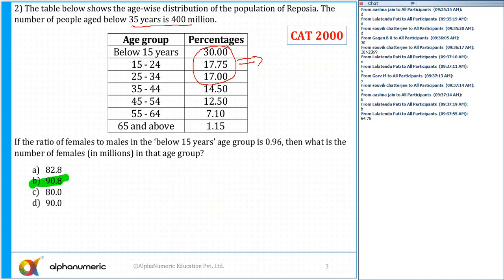...that is 30 plus 17.75 plus 17, which comes out to 64.75%. This equals 400 million, so the total population in that case is...